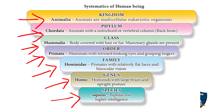Family Hominidae means the primates have a relatively flat face and binocular vision — two eyes separated by the nose, facing forward. Genus Homo means having a well-developed brain and an upright, erect posture — we stand straight.